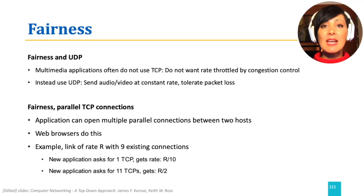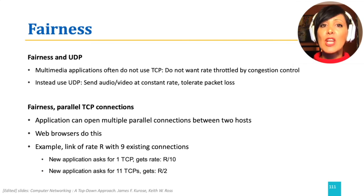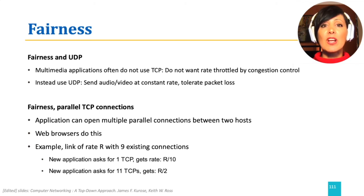For TCP, there are also ways to manipulate fairness to gain more throughput. This could be done with parallel sessions. For example, if we have a link of rate R with nine existing connections, and a new application comes in and asks for one new TCP connection, it gets the rate R divided by 10, because it is one of the 10 connections sharing the bottleneck.